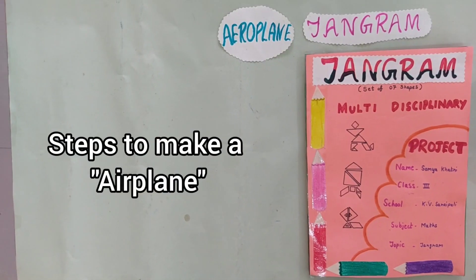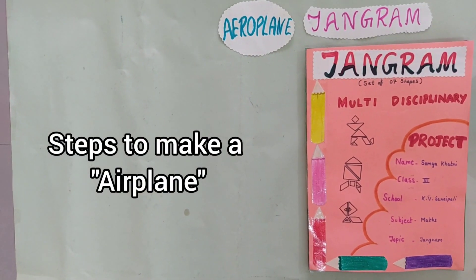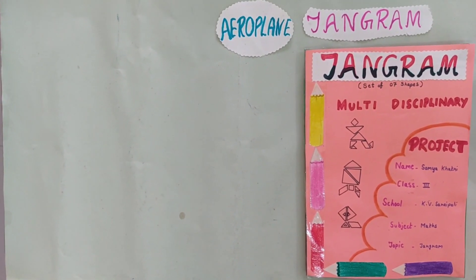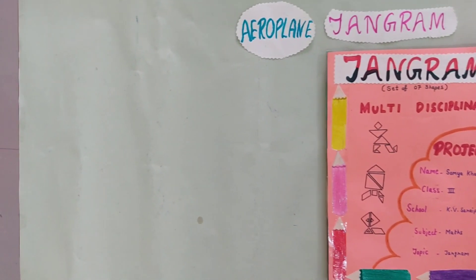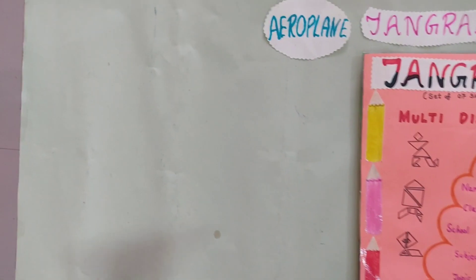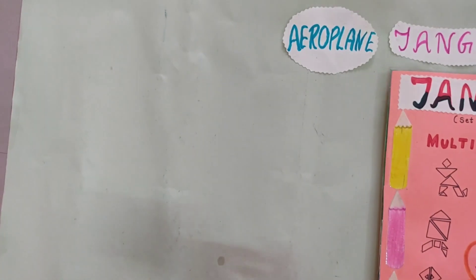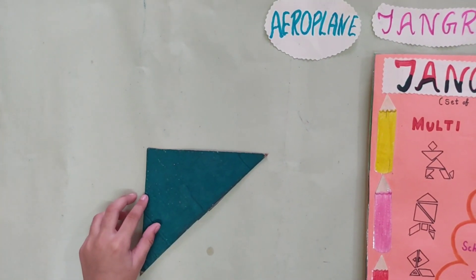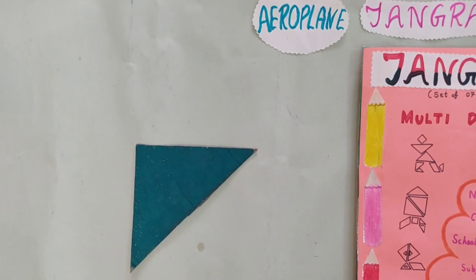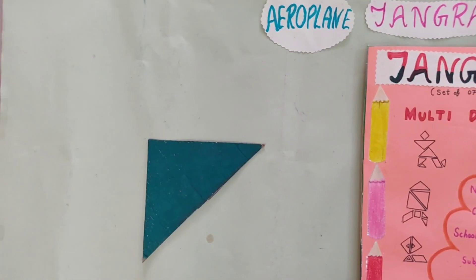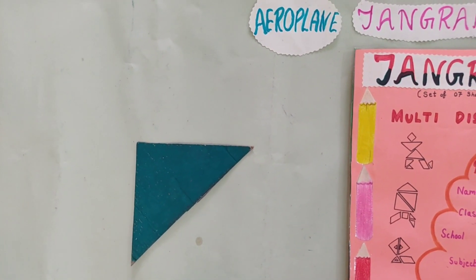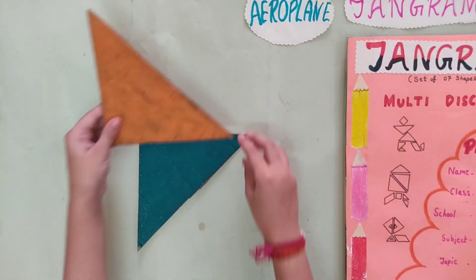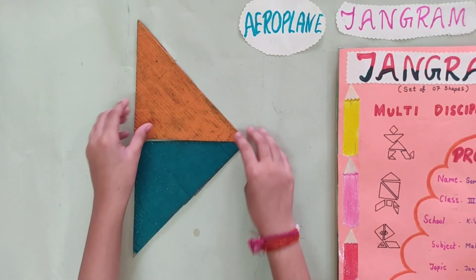Step: Make an airplane. First, we take a big triangle and place like this. Then we take another big triangle and place like this.